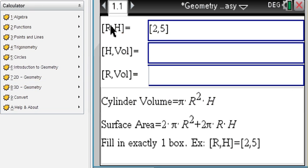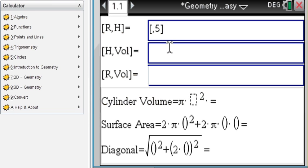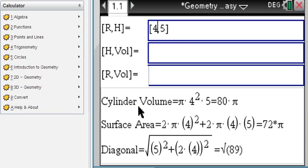Say we have a cylinder, and we know the radius and the height, or we could enter the height and the volume, or the radius and the volume. Let's say we know the radius and the height, say 4 and 5. We immediately find the volume to be 80 pi, and the surface area to be 72 pi, and the diagonal, root 89.